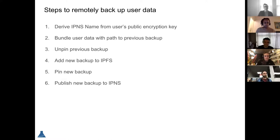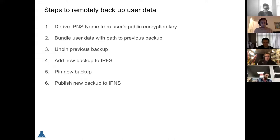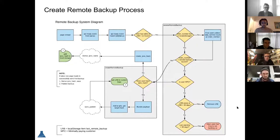We use IPNS currently to do the backups. We store a new IPFS key using the public key of the user — not the IPFS public key but the Diffie-Hellman public key — what we call the TallyLab keys. We use that as the name of the key, which gives us the IPNS name. We put all the tallies and all the collections up in a nice package, unpin the old one if it exists, add the new one, pin the new one, and then publish it. All that is well and good except that, as everybody knows, IPNS can be slow sometimes.